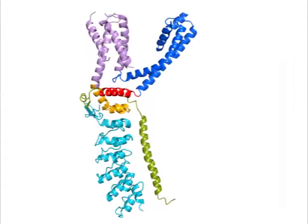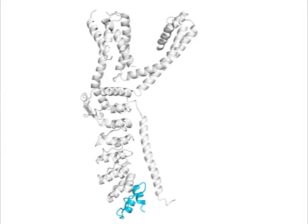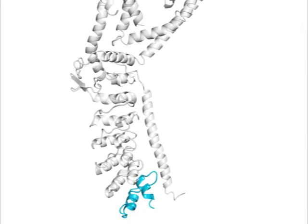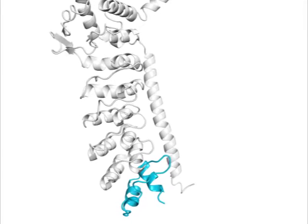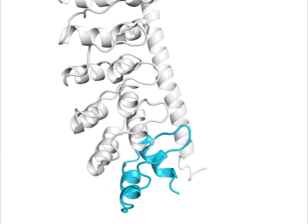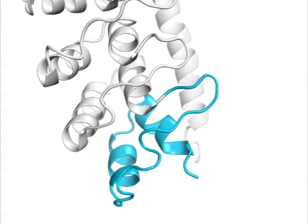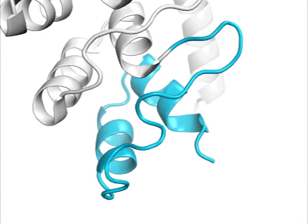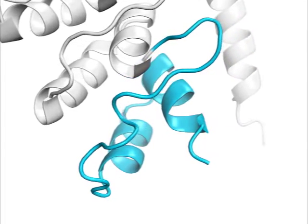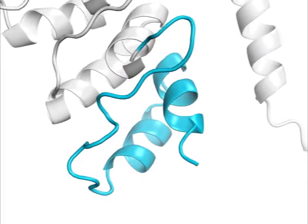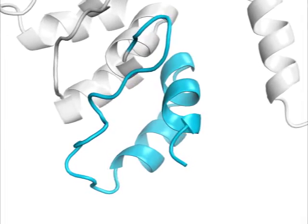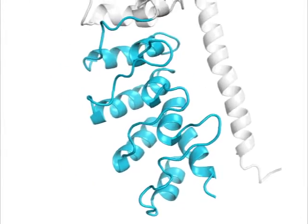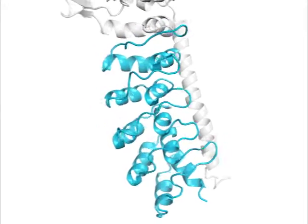Let's tour this subunit from the N to the C terminus. At the N terminus is the inspiration for TRPA1's name, an array of 17 ankyrin repeats. Here in cyan is repeat 12, the first repeat visible in the structure. Repeats 1 through 11 were not resolved, suggesting a flexible hinge around repeat 11. An ankyrin repeat consists of two helices and a hairpin loop.